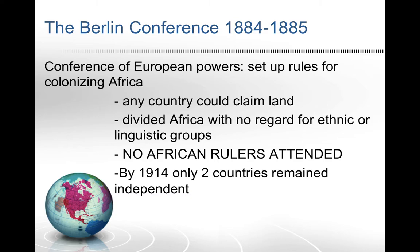In order to set some boundaries, a conference was called in 1884 in Berlin by Otto von Bismarck. He knew what this would be like and called the conference to set up rules and expectations to prevent as many European conflicts as possible. He set up the Berlin Conference to establish the rules for colonizing Africa. Berlin is the capital of Germany, where Prussia had joined to form Germany.